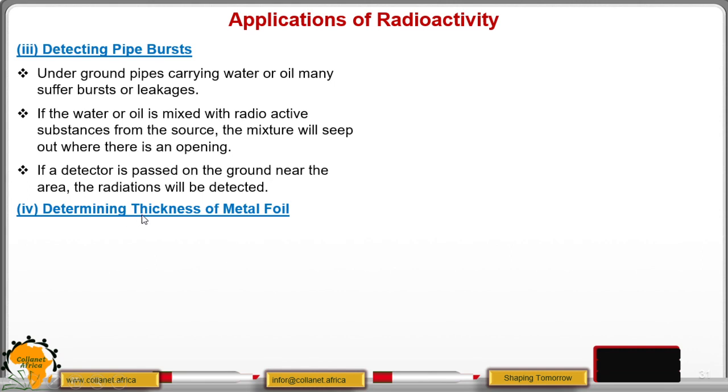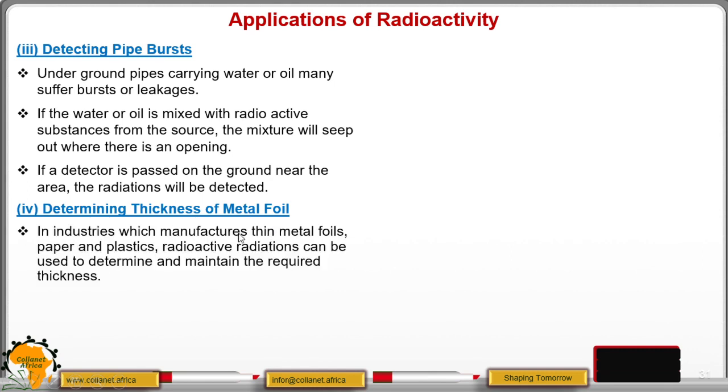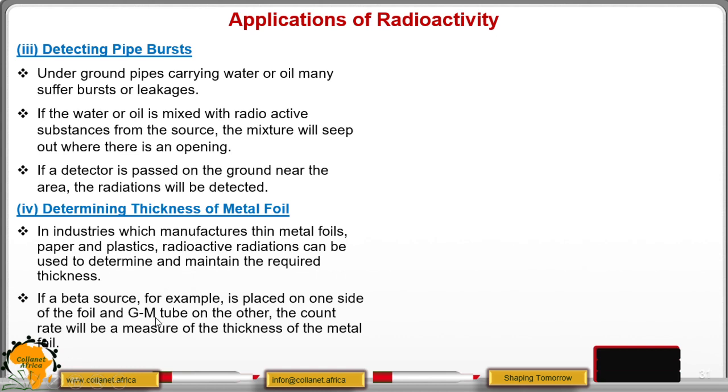Number five, it is used in determining the thickness of metal foil. This one is used in industries that manufacture metal foils, papers, and plastic. The radioactive radiations can be used to determine and maintain the required thickness. How does this happen? The beta source is placed on one side of the foil and the other side we place the GM tube. GM tube is a radioactive detector and it counts. It will give us the count of radiations and these radiations will be a measure of thickness of the metal foil.